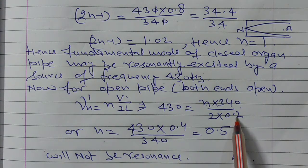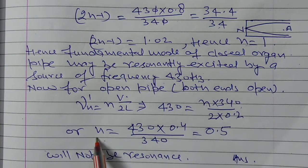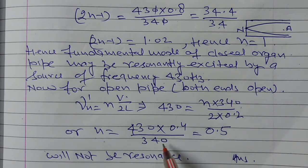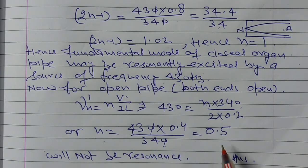From this, we can find out, this is 430 into 0.4 upon 340, and on solving, n is equal to 0.5.